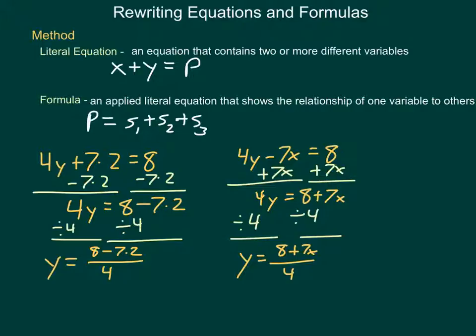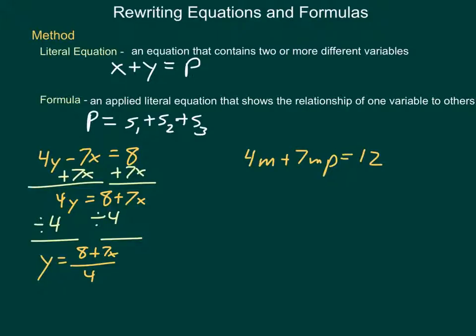So we can choose any variable we want and do what we need to isolate it from the others. Let's look at another equation. Here we have 4m + 7mp = 12, and let's say I want to solve this for the variable m. When I have the variable showing up in multiple locations that aren't like terms on one side of an equal sign, you have to apply other rules and principles of mathematics. One of them, at this point in math, typically we've always had moving one direction, we're going to have to reverse. And that principle is distribution.